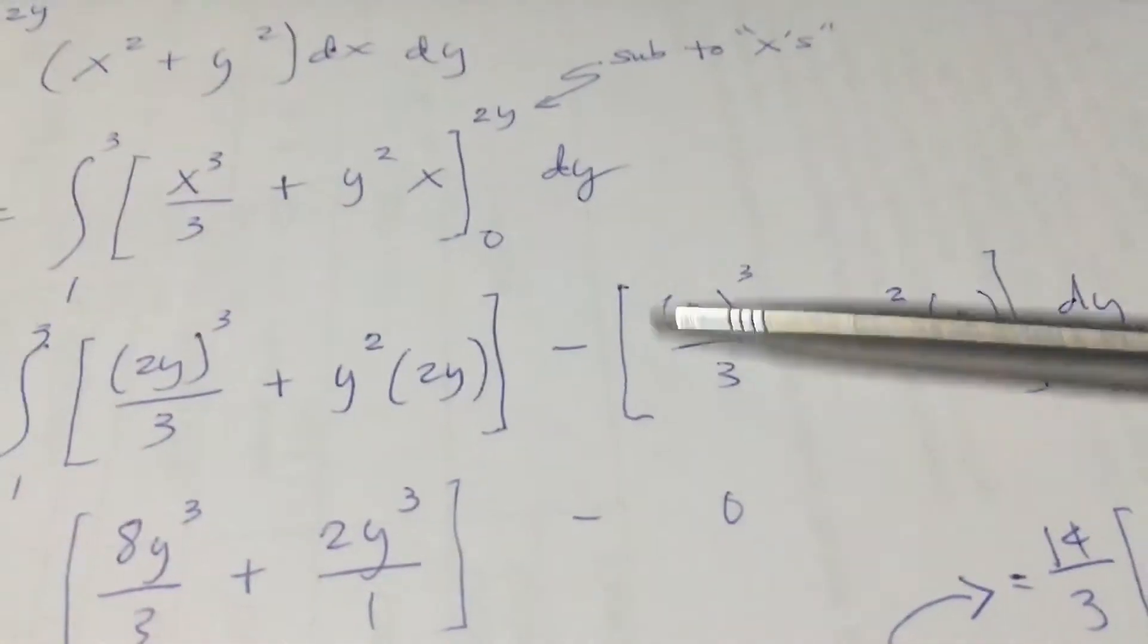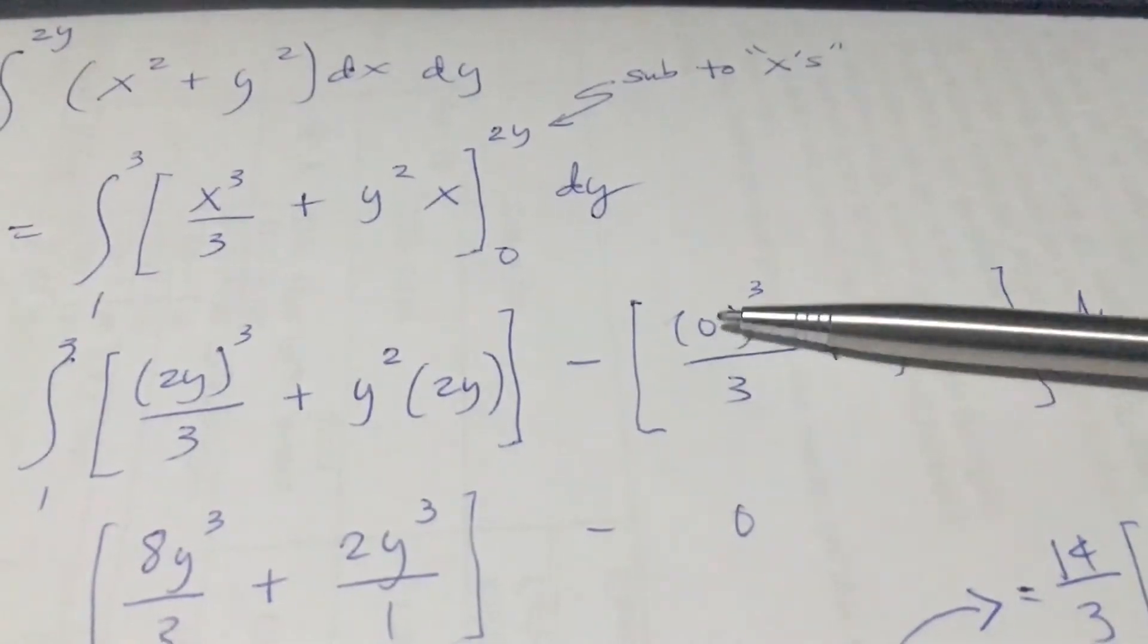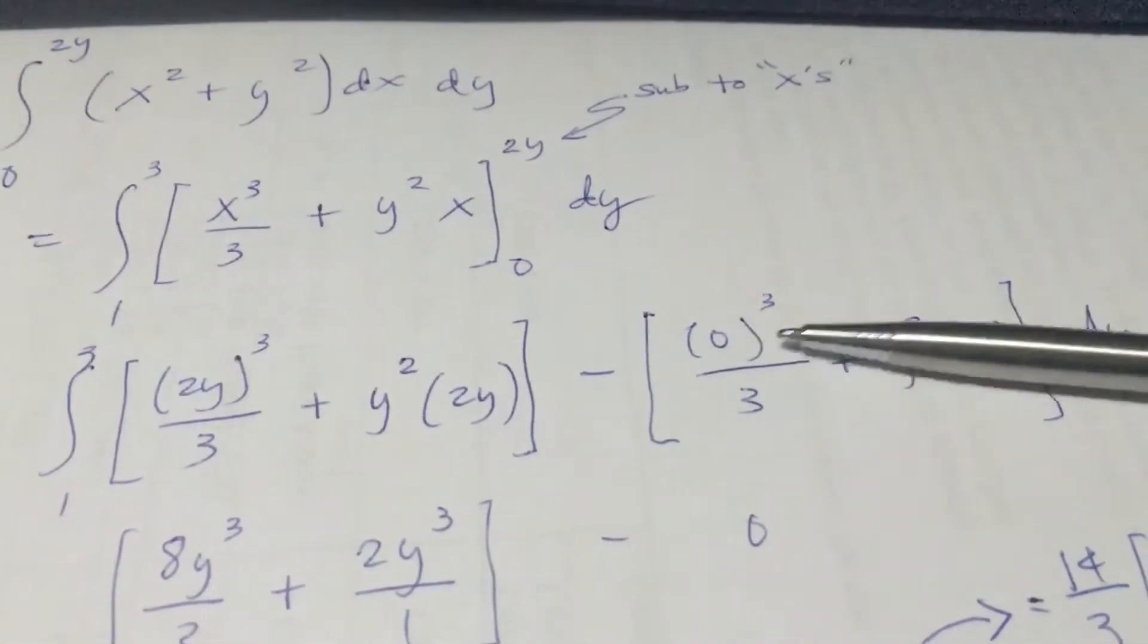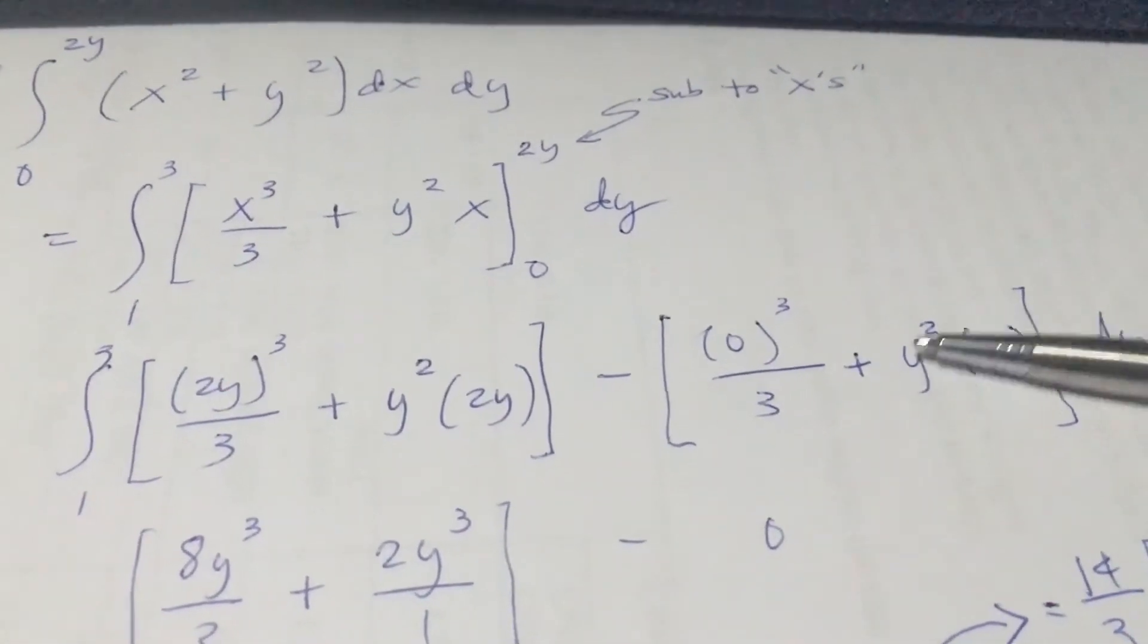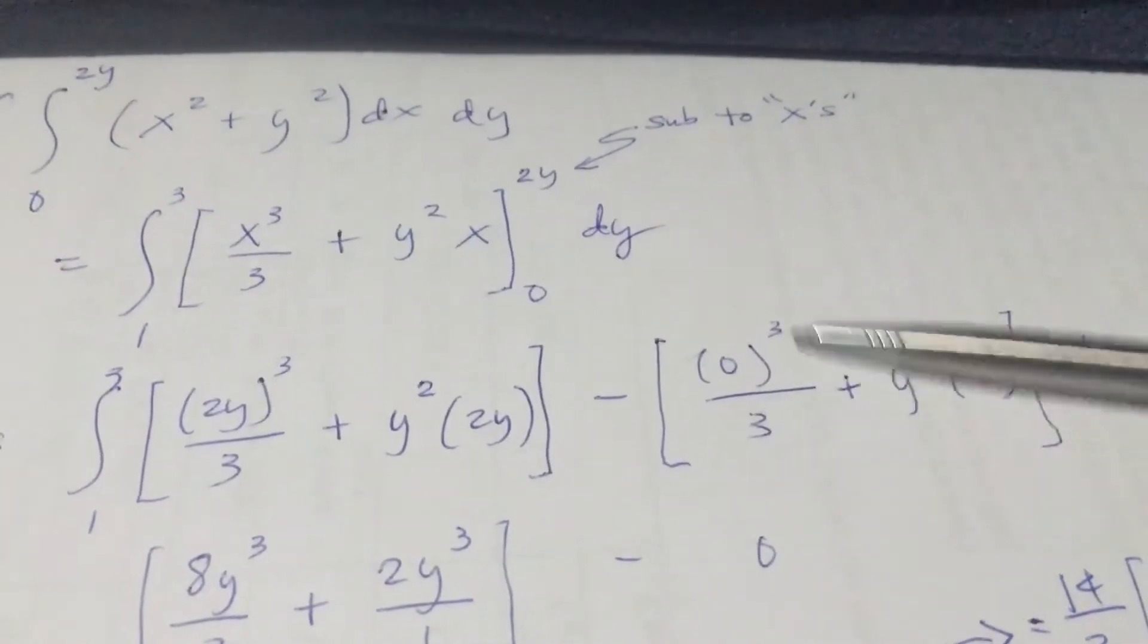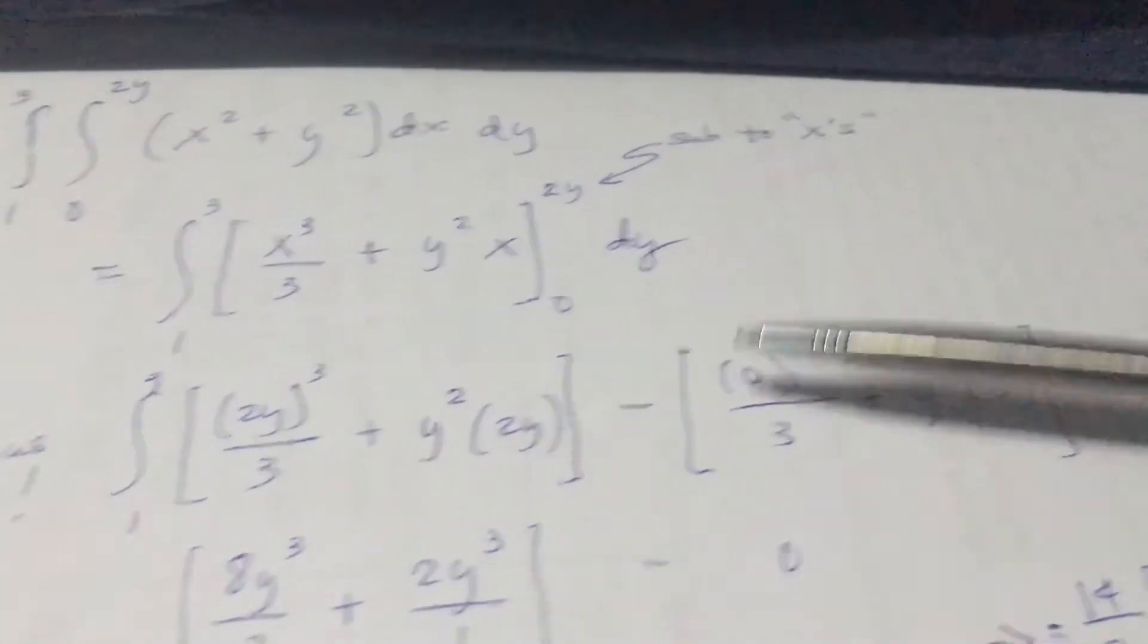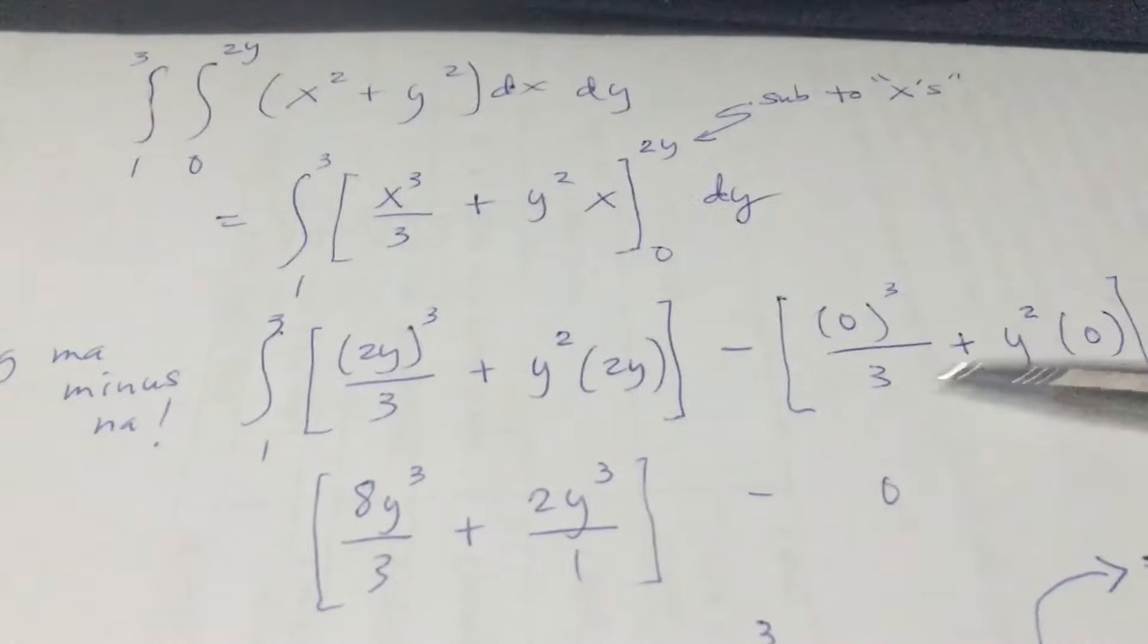That would be all zeros because if you multiply or if you cube something that is zero, it will become zero. All of them will become zero.